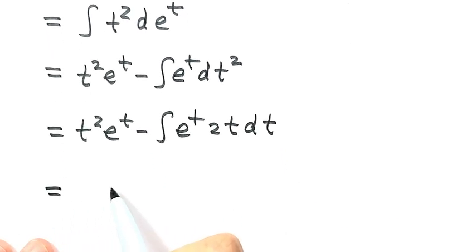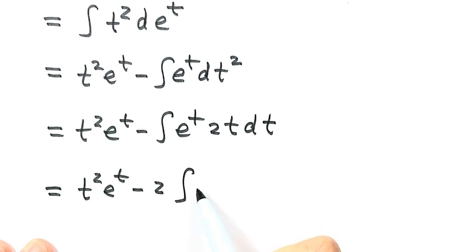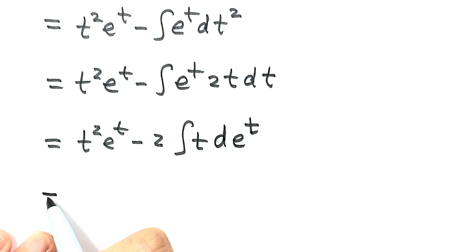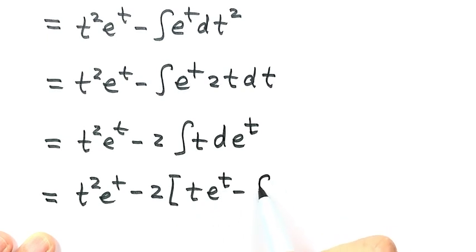Let's simplify this part. Take out the 2, then here's a t. Put e to the power t back here, and this one is just d of e to the power t. For this integral, we can use integration by parts again. That's t e to the power t, minus e to the power t, then dt.